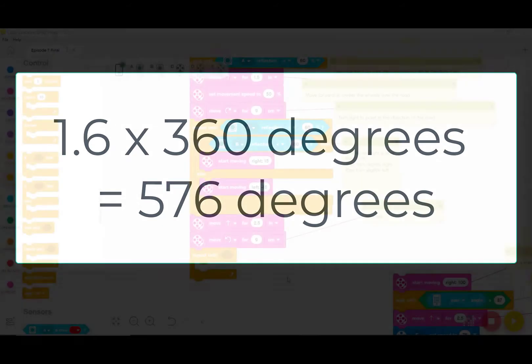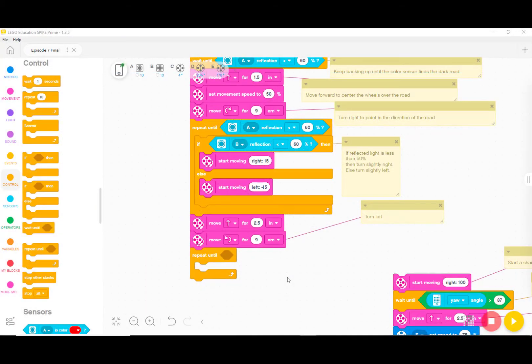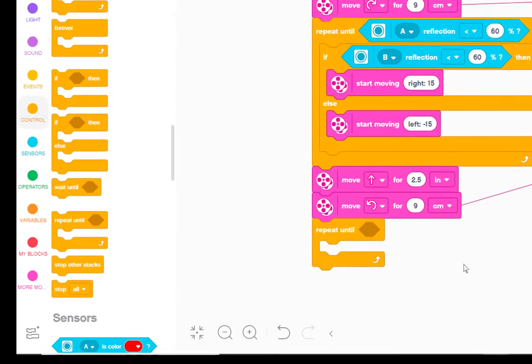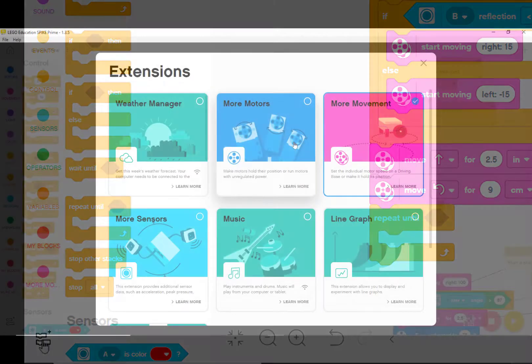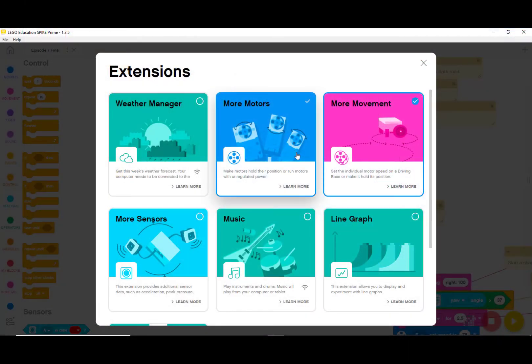The block we need to measure the relative position of the motor is hidden in a special menu called More Motors. Let's add this menu by clicking on the small icon in the lower left corner and then clicking on More Motors.